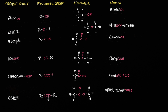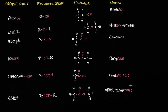Esters have the functional group COO with two R groups — one on the left and one on the right — clearly depicted in this example. Here's our COO functional group with our two R groups on either side. In this example it's called methyl methanoate. This presentation is not about naming; it's more about being able to identify the family and the functional group. So when it comes to the name, if it ends with OATE, you're dealing with an ester.